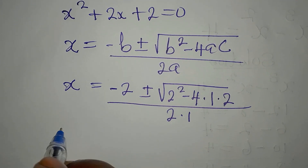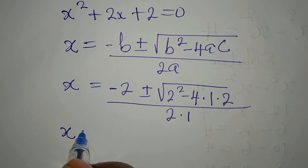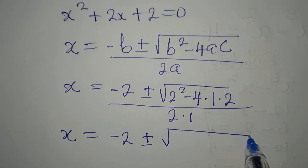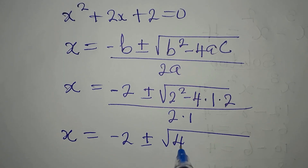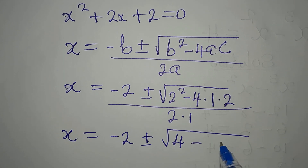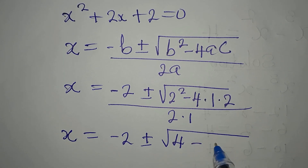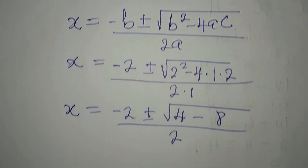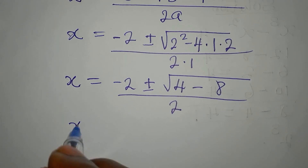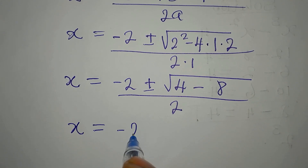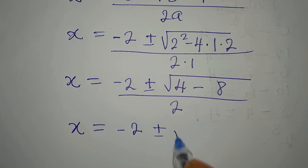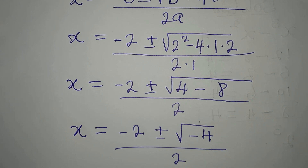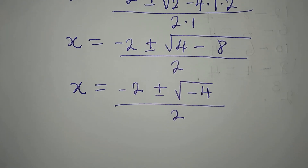Proceeding: x equals negative 1 plus or minus the square root of 1 minus 8, divided by 2. So we have the square root of negative 7... actually, b squared is 1 and 4ac is 8, giving 1 minus 8 equals negative 7. Wait — let me recalculate: the discriminant is 4 minus 8 equals negative 4, so x equals negative 2 plus or minus the square root of negative 4, all over 2.